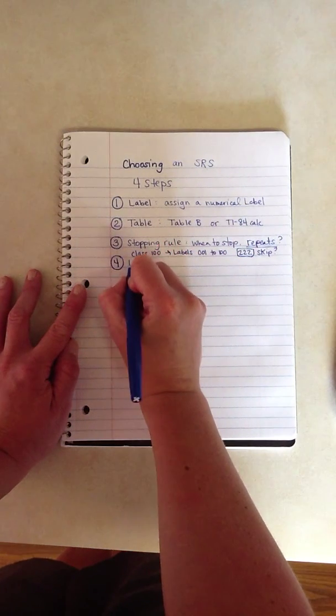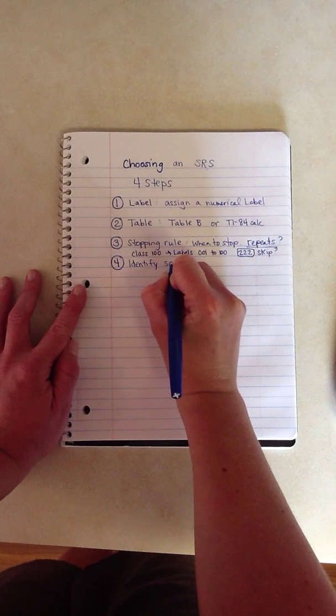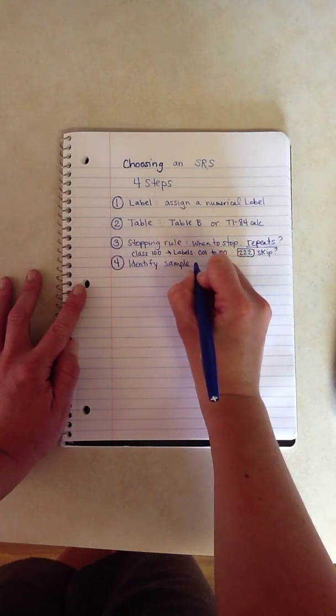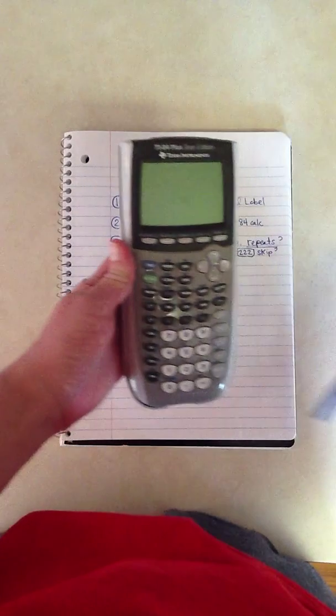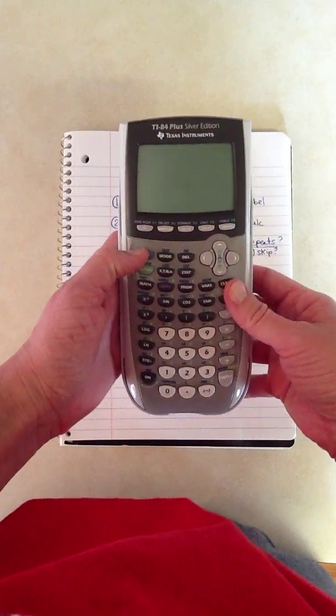Now the last step is really simple. All you have to do is identify the sample that you pick. So let's say I use my calculator to generate random numbers. I will actually tell you the student who would win their prize.